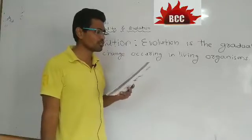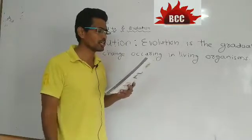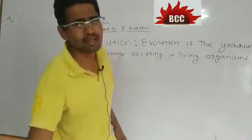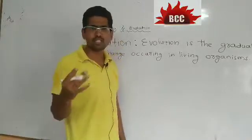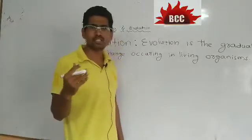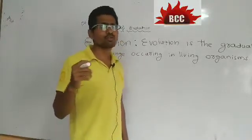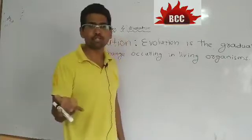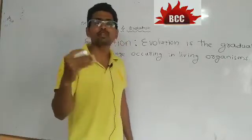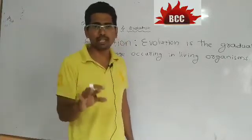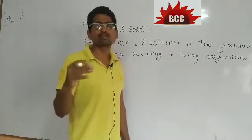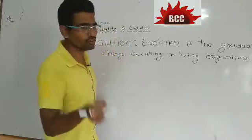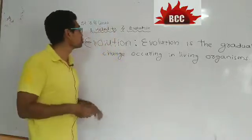The next question is: why are many species of animals and birds getting extinct? The same thing applies — climate is changing, temperature is changing, atmosphere is changing. Those who are able to adapt will survive; those who cannot adapt will become extinct. This connects us to the topic of evolution.